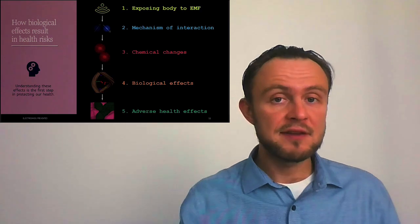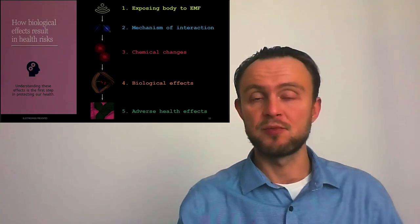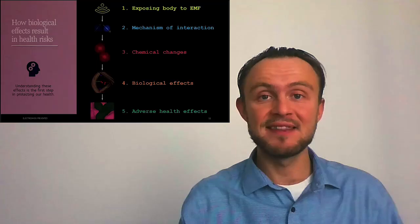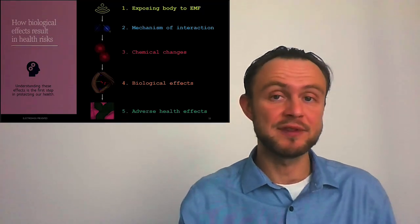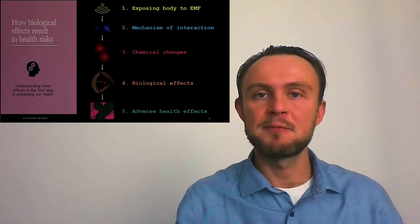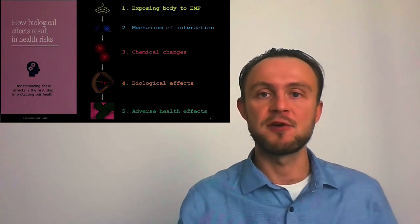First, we have living cells or our body exposed to electromagnetic field. This will translate into changes via physical mechanisms, which will result in chemical changes. These will translate into biological effects and if body cannot sufficiently compensate them, these biological effects will result in adverse health effects. Understanding this pathway is the first step in protecting our health because we can see right now where we can intercept and prevent adverse effects from happening.